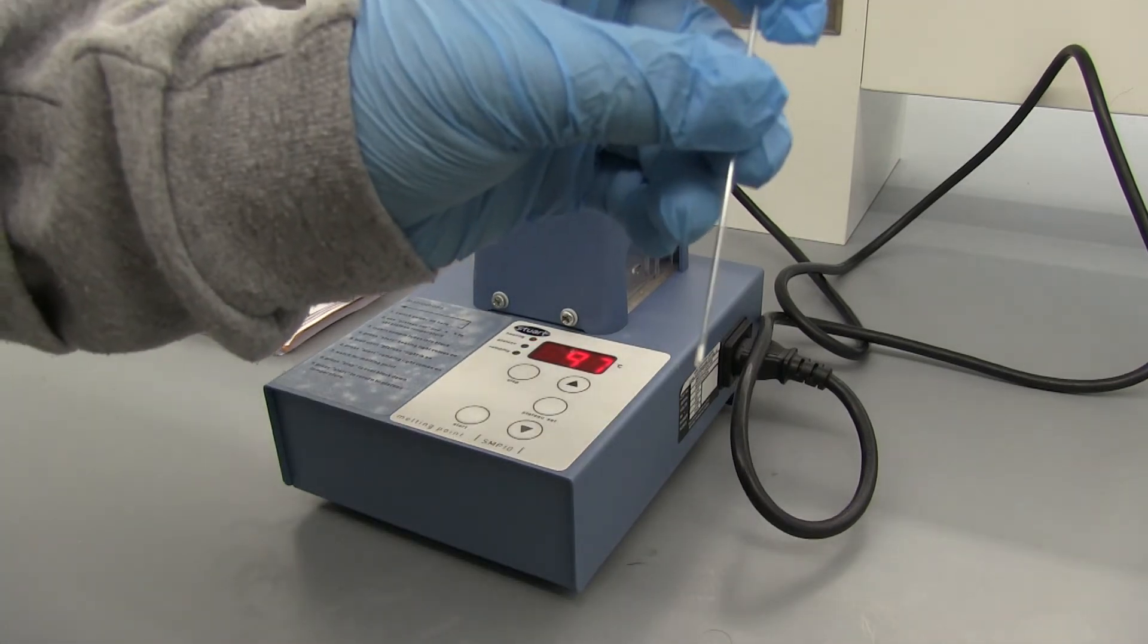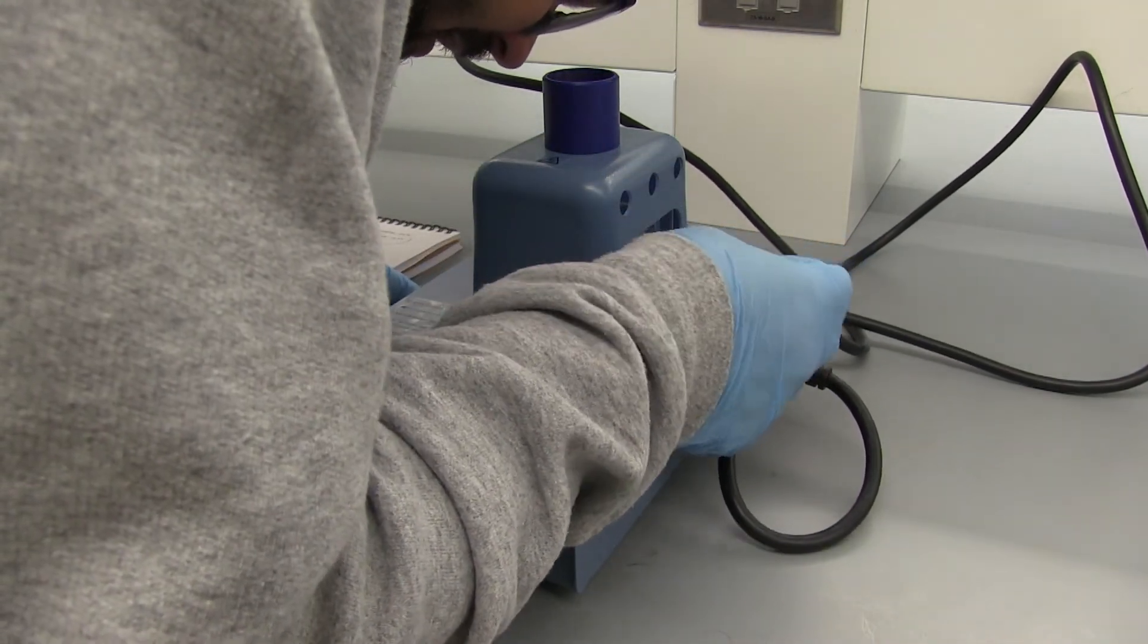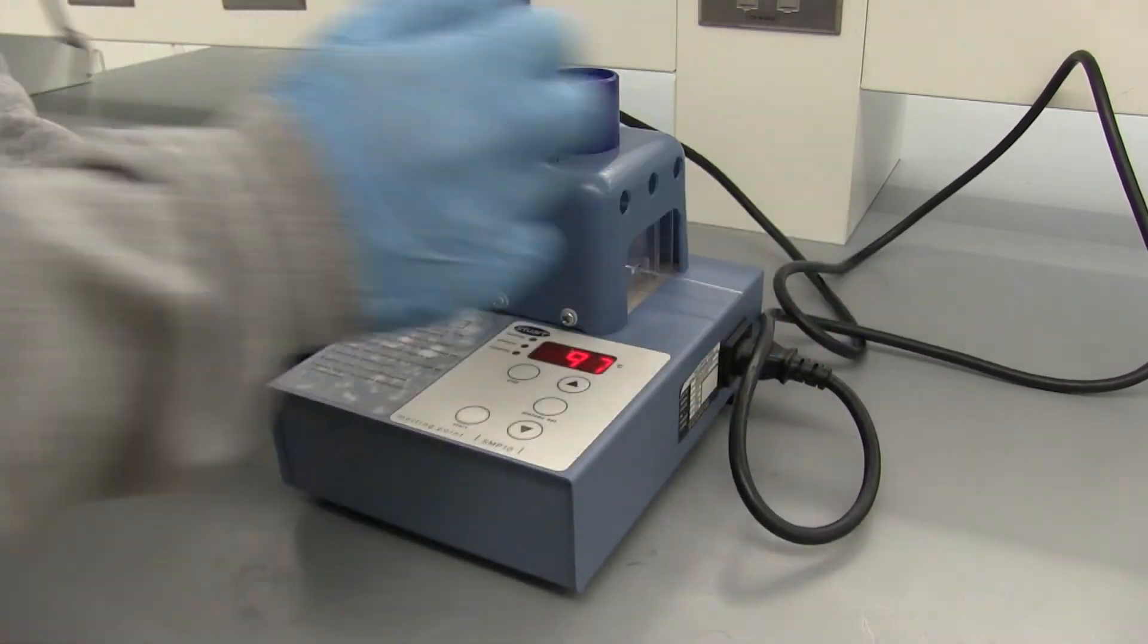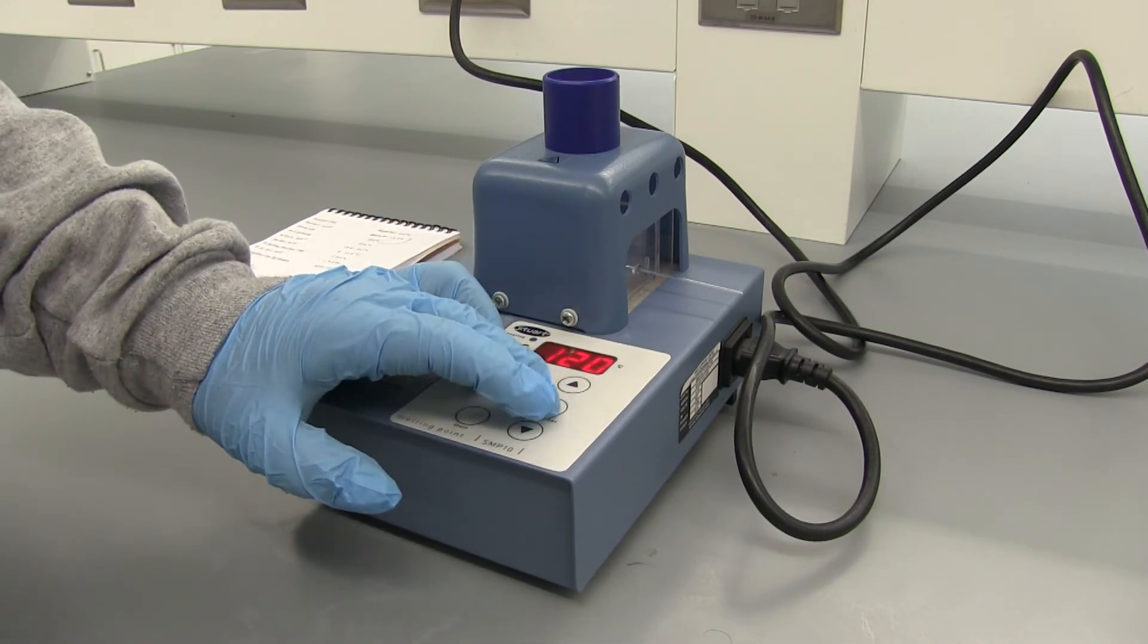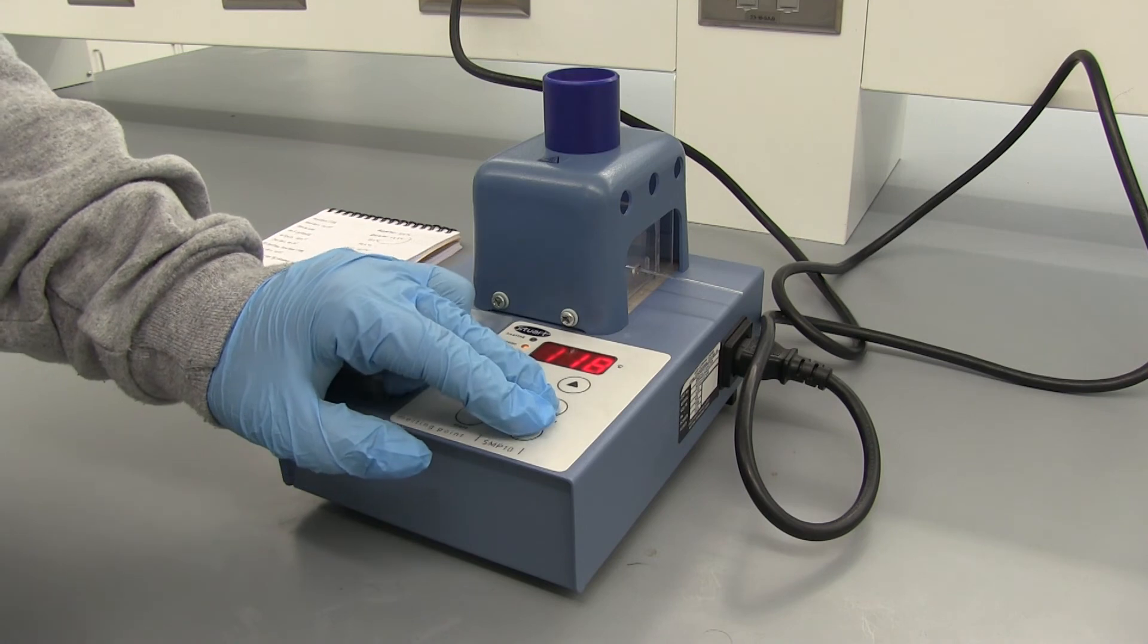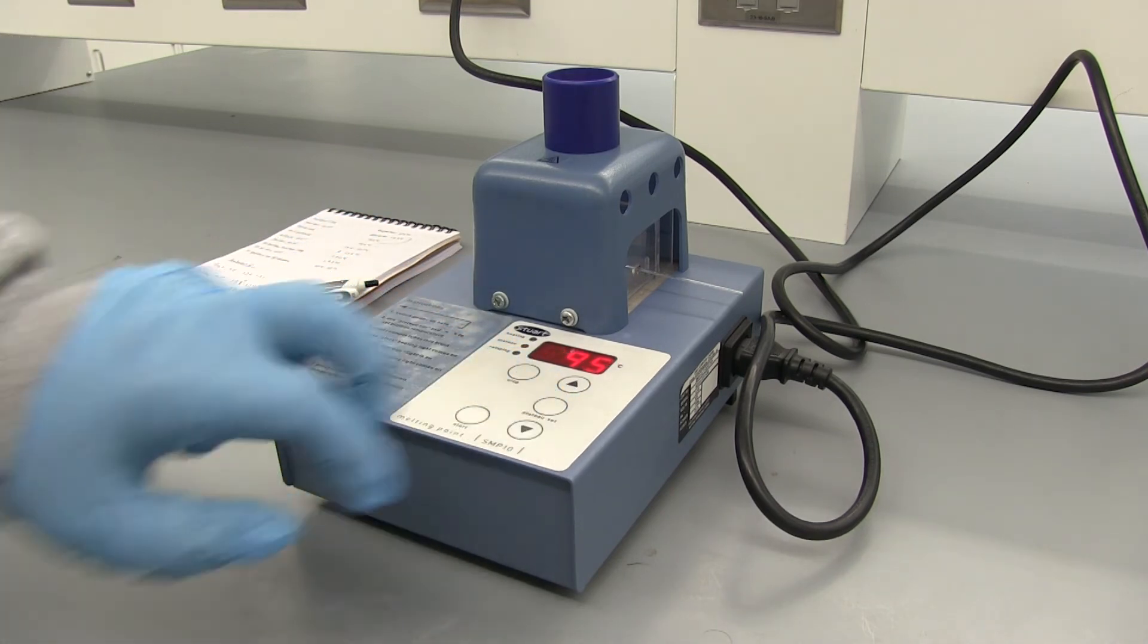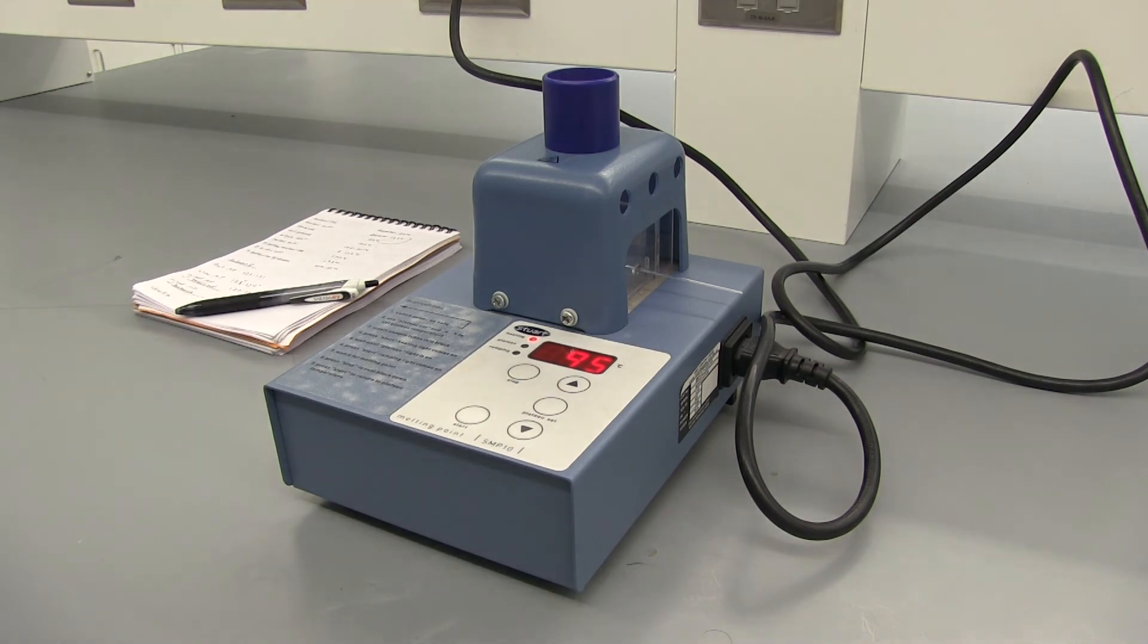Alright so now I have a mixture of benzamide and our unknown and we'll go ahead and load it into the melting point apparatus. Alright this time since we got a confirmation that it was benzoic acid just to check we're going to run benzamide but I'm going to set the melting point, the plateau, a little bit lower to 118 and we'll go ahead and start it getting heated up. So we expect the melting point to be lower as well as the range to be broadened.